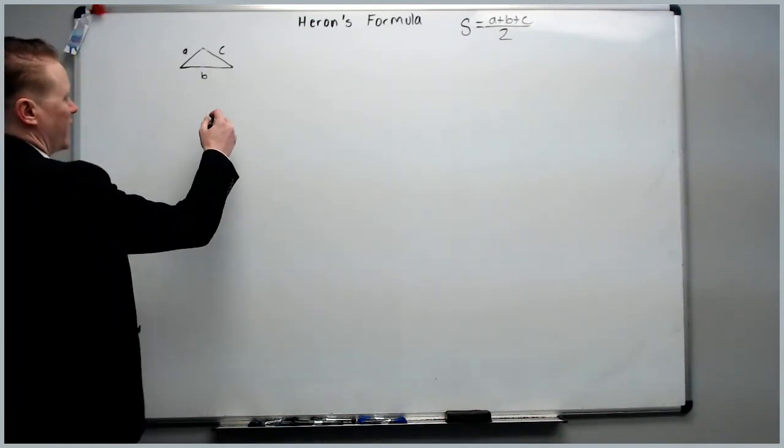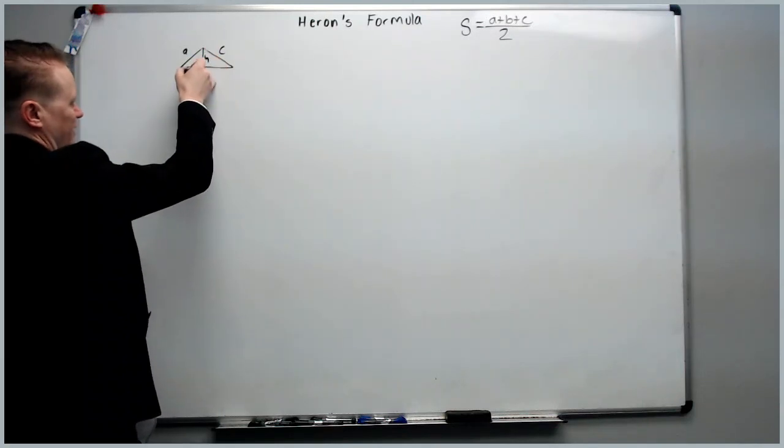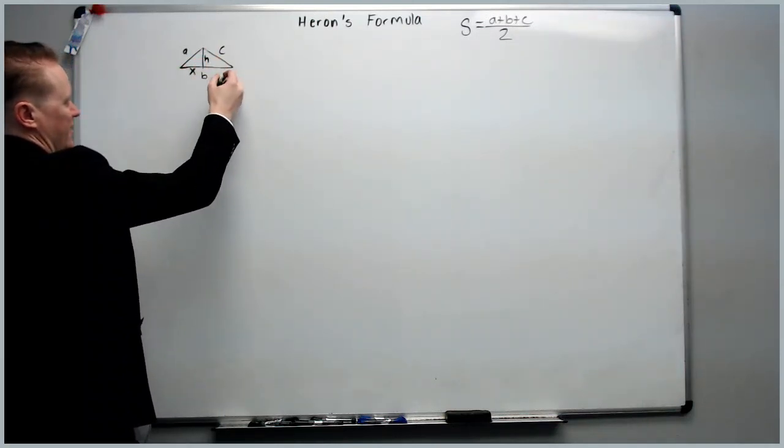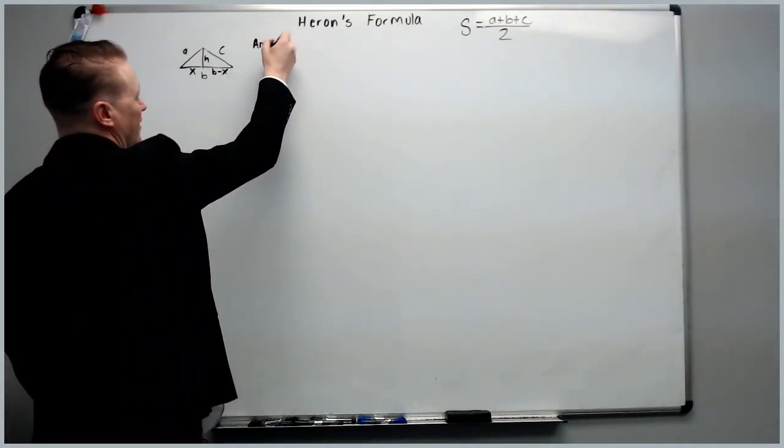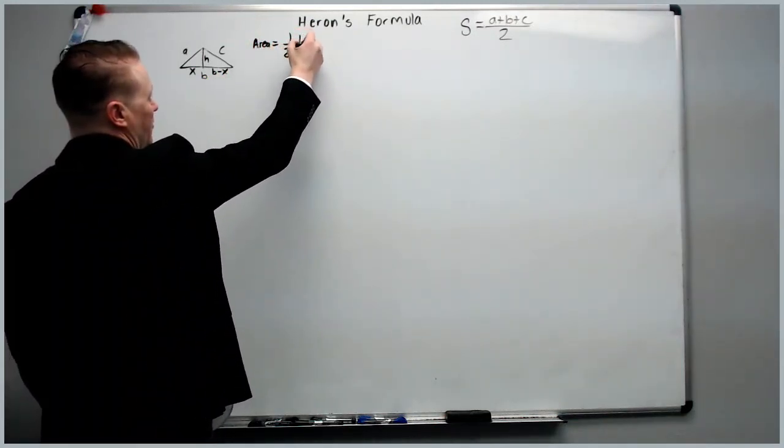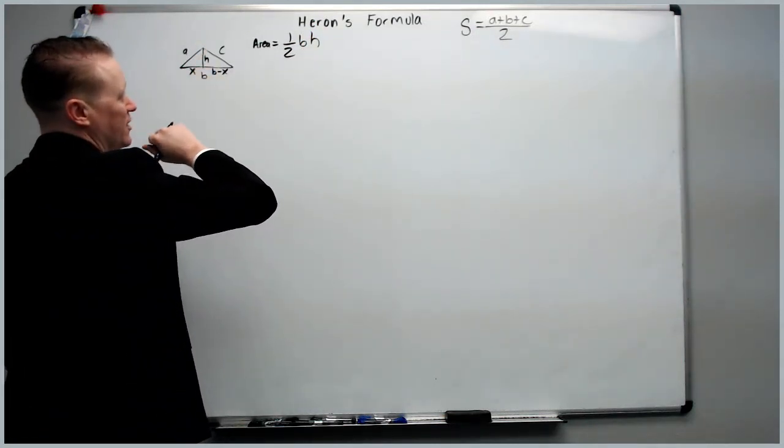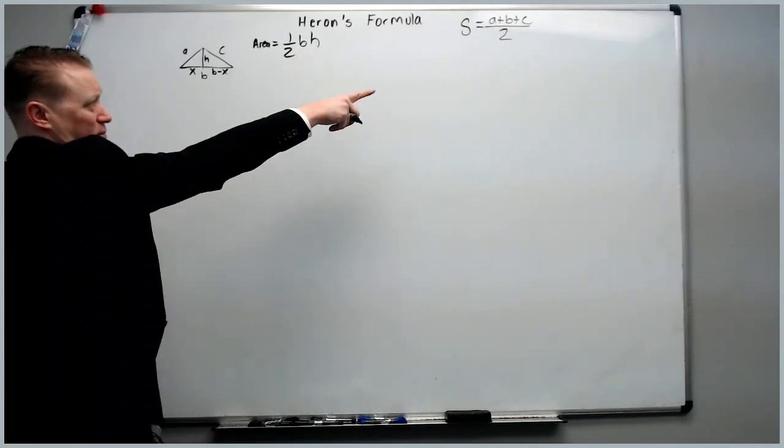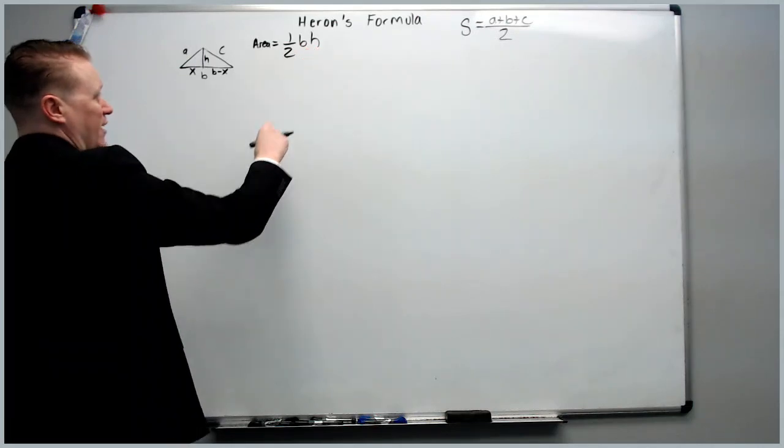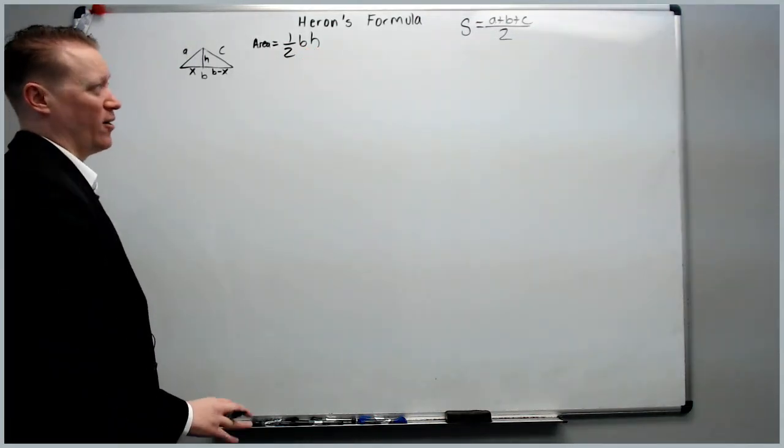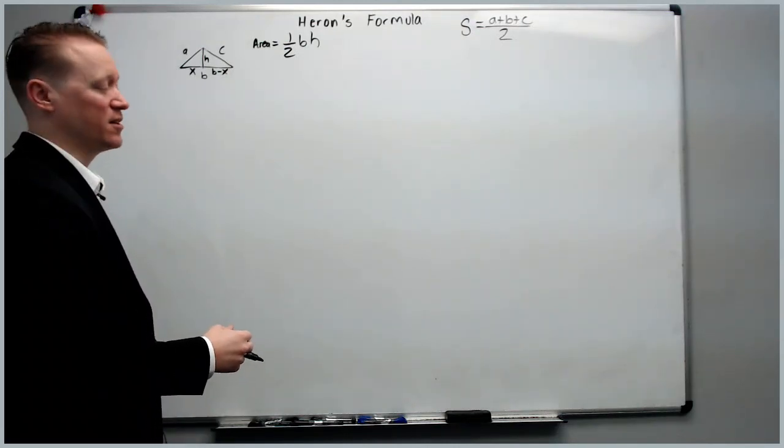So the first thing we're going to do is we'll drop a height here, and we'll give this a length and the common variable choice is X, and we'll make this B minus X. Now we know that area is equal to half the base times the height, the base being B in this case, the height being H. The goal is to use this formula along with that substitution to get rid of the H and be able to express the area strictly in terms of the side lengths or the semi-perimeter.